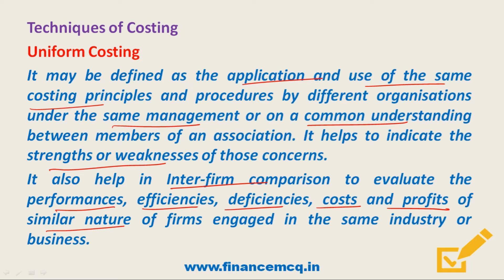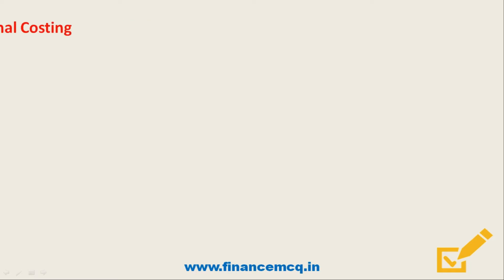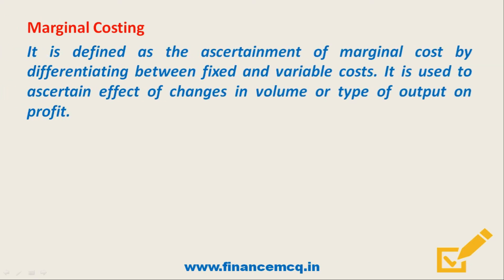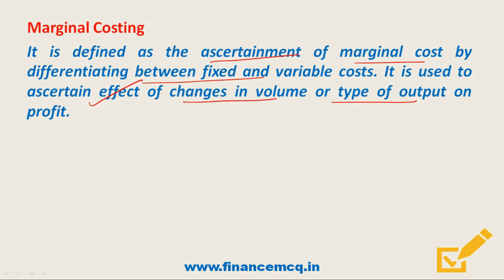The next technique of costing is marginal costing. Marginal costing is defined as the ascertainment of marginal cost by differentiating between fixed and variable cost. It is used to ascertain the effect of changes in volume or type of output on profit. Under marginal costing, variable cost is charged to the unit cost, while fixed cost for the period is written off in full against the contribution for that period.